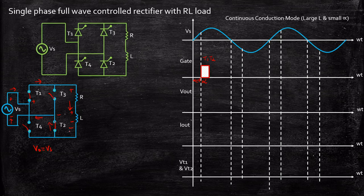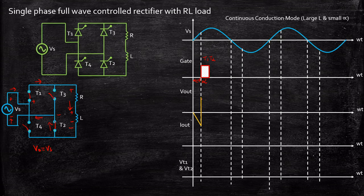Whatever voltage you are supplying will appear at the load terminal, so Vout will be equal to Vs. The output voltage waveform will start following the supply voltage waveform from the instant alpha when T1 and T2 are turned on. As a result, Vout basically follows the supply voltage waveform, giving a waveform similar to the supply voltage — this is because of T1 and T2 conduction.